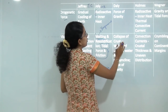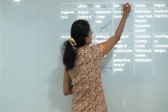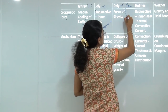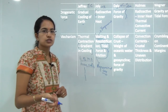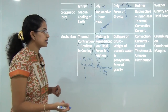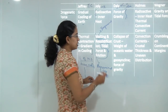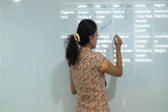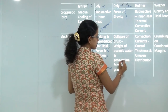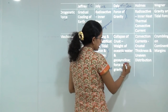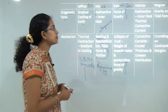Next was Daly's continental sliding theory. The only force he considered was the force of gravity. He talked about the collapse of the earth's crust due to the weight of oceanic water, the geosynclines, and the forces of gravity acting on it.